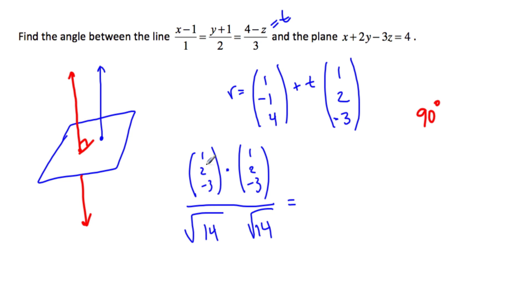So then this is going to get 1 times 1, 2 times 2, 3 times 3, that is 14, over root 14 times root 14 is 14, which is equal to 1.